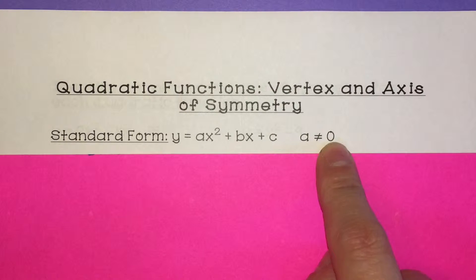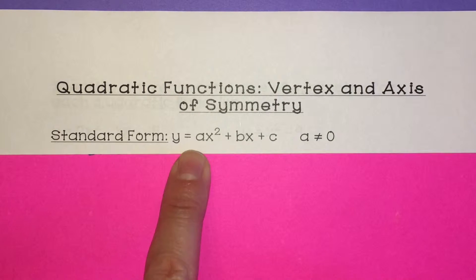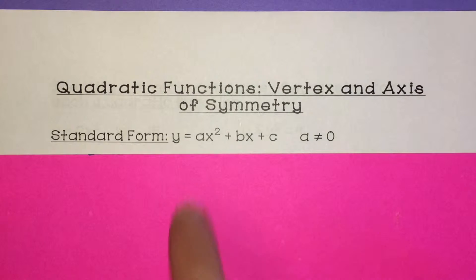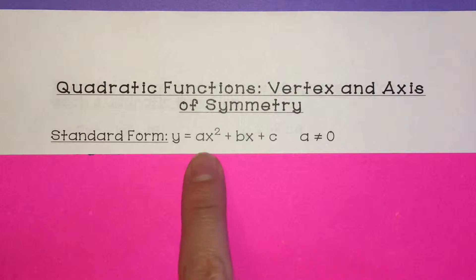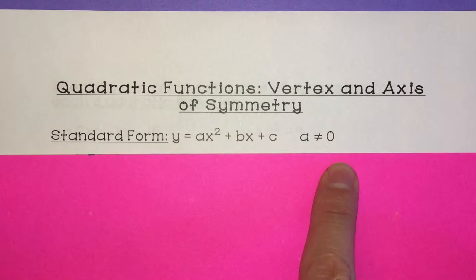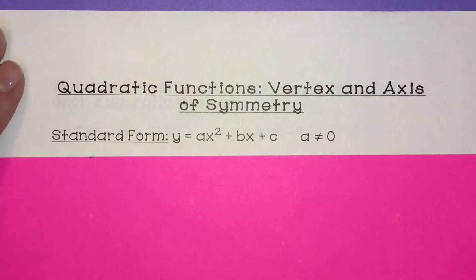And a cannot equal 0, meaning the number in front of x squared can't be 0, because 0 times x squared is 0, and that would mean you don't have an x squared term. So that's the one rule: a cannot be 0.